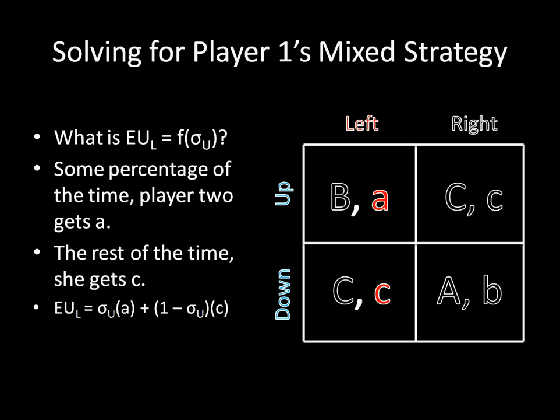We're going to solve for Player 1's mixed strategy, running the mixed strategy algorithm just as we would before. We're asking ourselves what the expected utility of left is for Player 2, then what the expected utility of right is for Player 2, then setting those two expected utilities equal to each other and solving for Player 1's mixed strategy that leaves Player 2 indifferent between her two pure strategies. So, Player 2's expected utility for playing left is equal to the probability that Player 1 plays up times payoff A, plus the probability that Player 1 plays down — which is 1 minus sigma_up — times C.